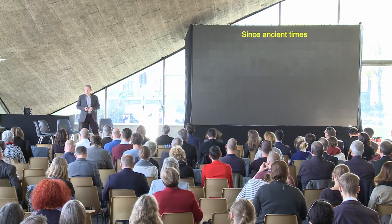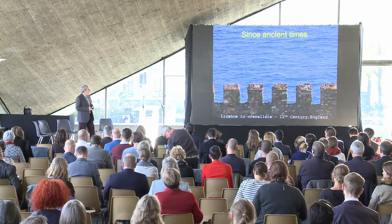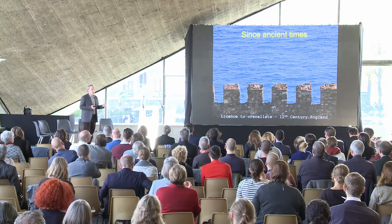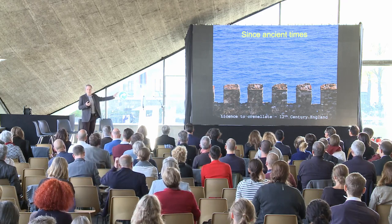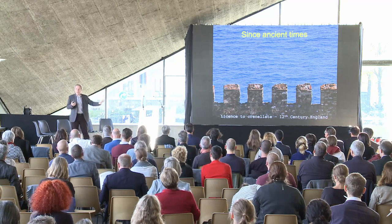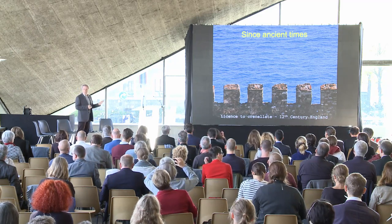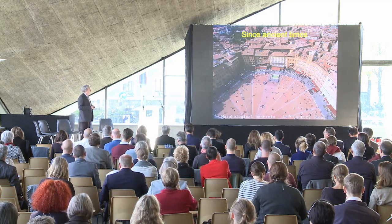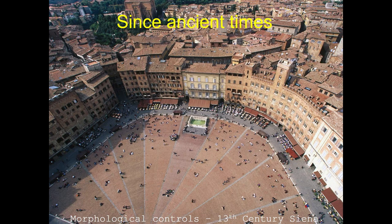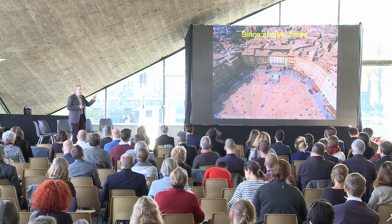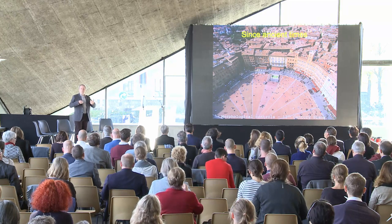We've been doing this an awfully long time, since ancient times. The earliest example of this governance of design that I could find in England is from the 12th century, where the king took the power to control crenellations — you had to get a license to crenellate from the king, because the king didn't want people building castles. More sophisticated in the 13th century, Siena introduced a whole series of morphological controls to control things like the building line, even the proportions of windows, materials and so forth.